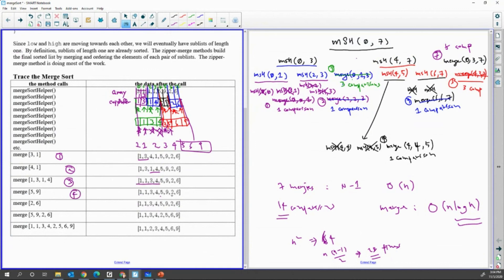Fourth merge, this order is very important: 5, 9. And fifth merge, because it's a recursive method, it's a stack.